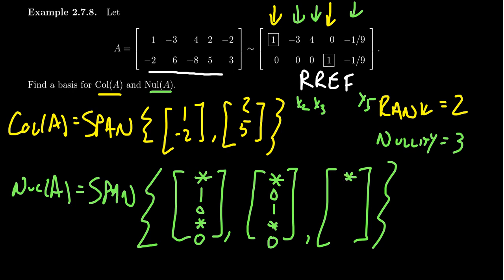We get a star for x1, 0 for x2, 0 for x3, star for x4, and 1 for x5. Now we have to come in and fill in the stars. Let's look at the first row.